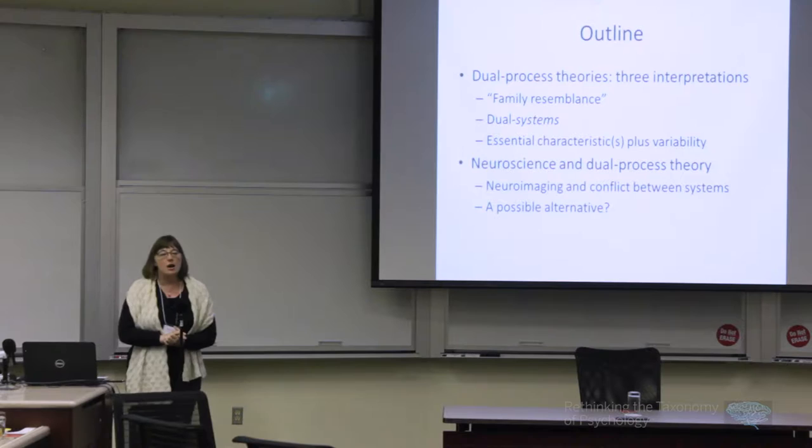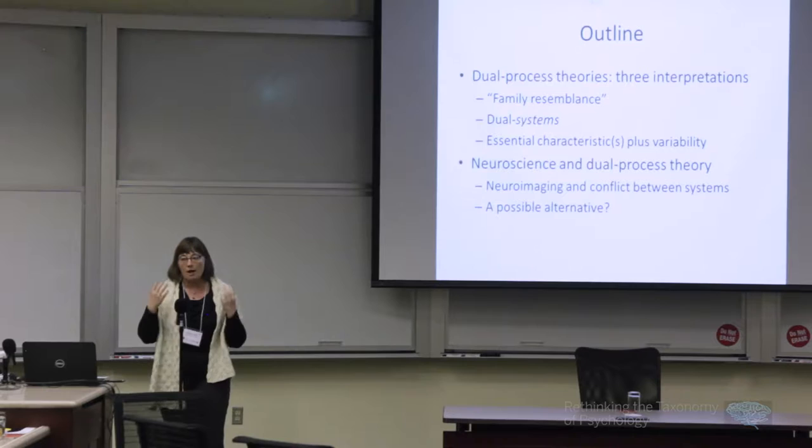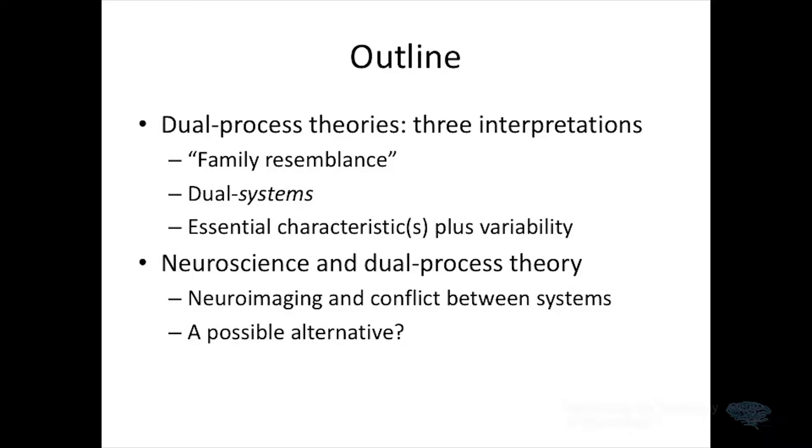To do that, I'm going to start by talking about dual process theories, identifying three different interpretations of what the dual process approach is actually doing — and these are roughly chronological. The beginning described the two processes in terms of a family resemblance, a term from Richard Samuels. Then there was a switch from dual processes to dual systems. Most recently there's been backing away from systems and talking instead about essential characteristics of the two types and certain amounts of variability. Then I'll discuss the neuroscience question, touching on the conflict-focused neuroimaging approach and sketching a possible alternative.